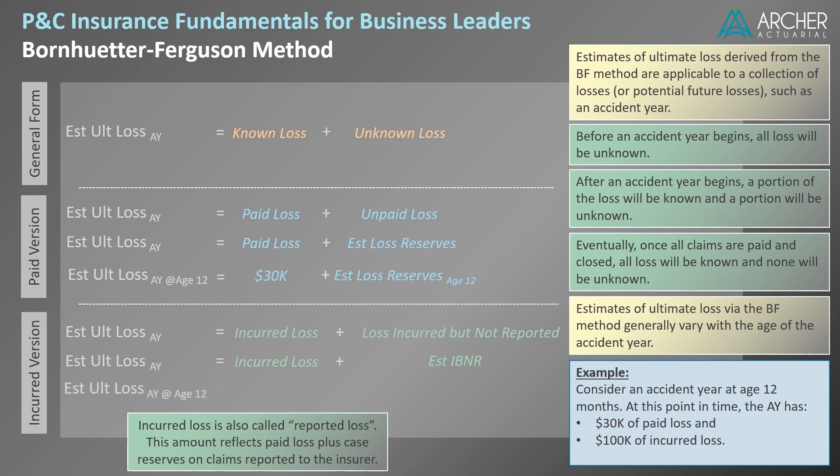And in the incurred version, the estimate of ultimate loss would equal the $100,000 of incurred loss plus the estimate of IBNR at age 12.